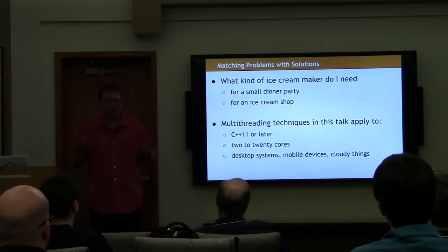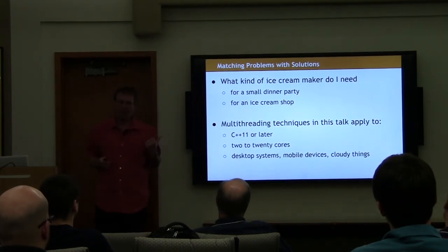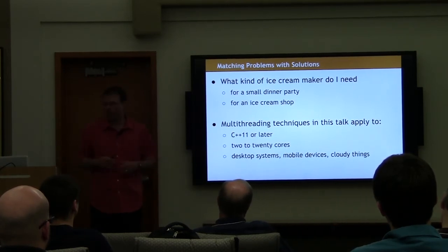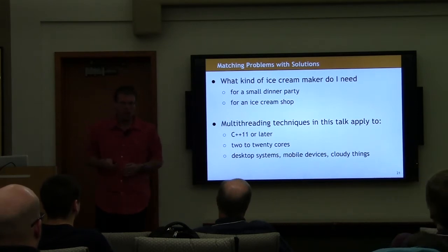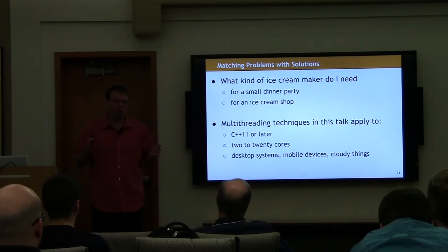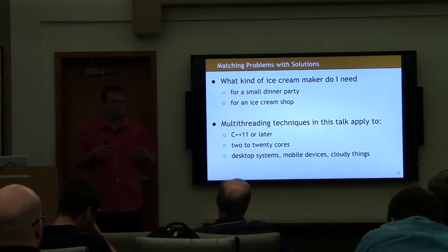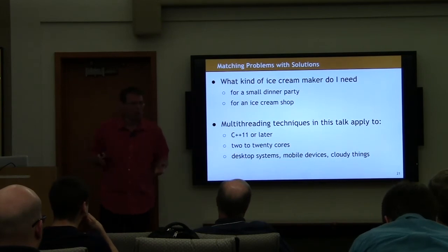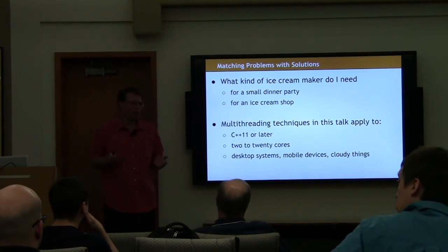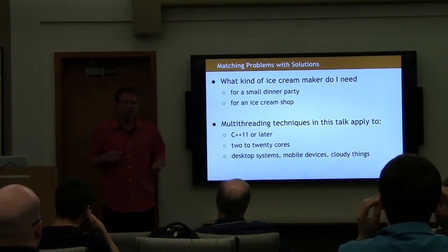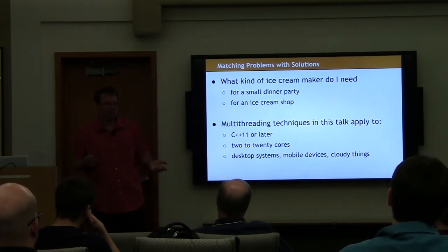When you're looking at a multi-threaded problem, the first thing I ask is: what's my scale? You need a different kind of ice cream maker depending upon how many people you're serving. The things I'm going to be talking about here apply to a particular subset: typical desktop or server applications for some single or double-digit number of cores written in C++11 or later. This covers a lot of the universe — mobile devices, desktop, servers. What this doesn't cover is the 10,000 to 100,000 core scientific computing situation — that's a completely different ballgame.